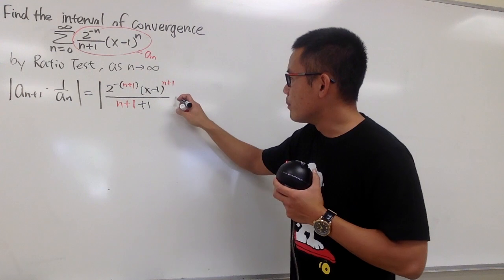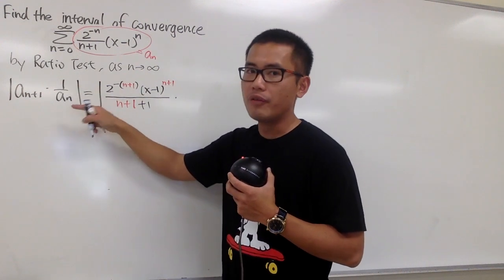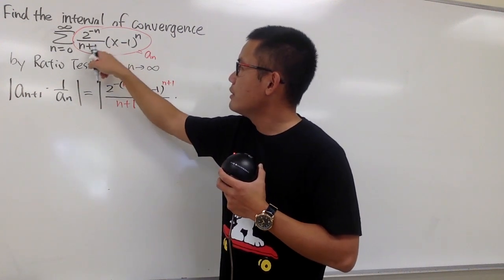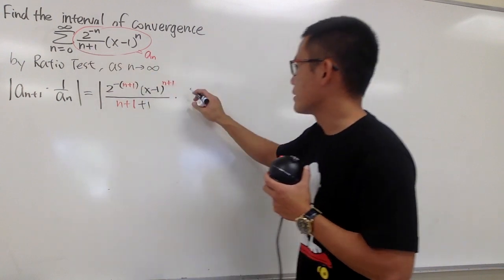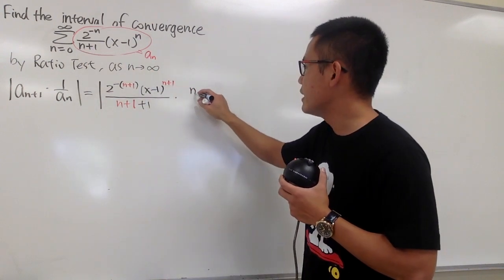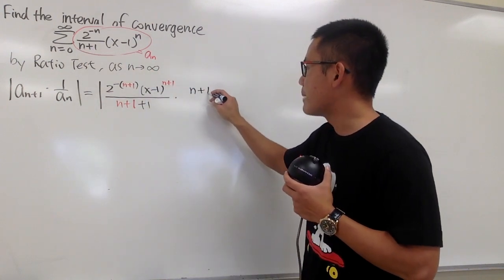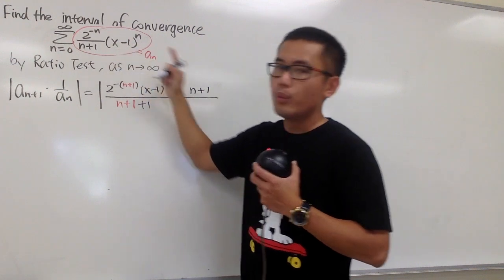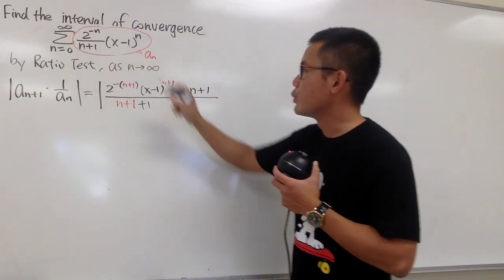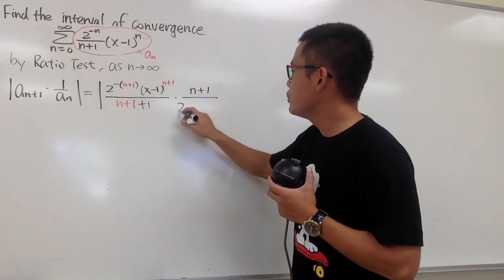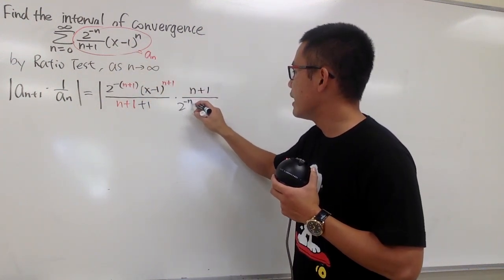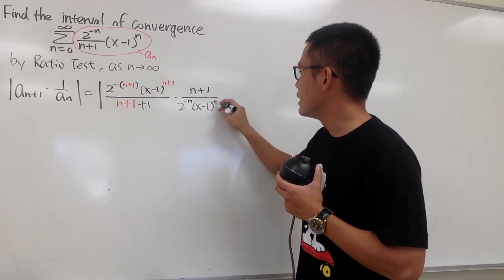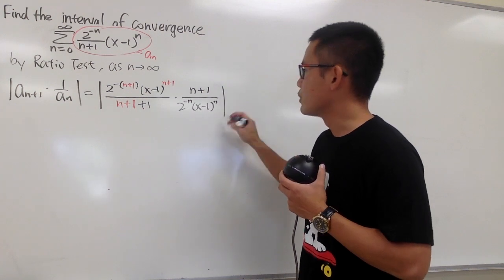Now we multiply by the reciprocal of a_n. What was on the bottom earlier will now be on the top, so we have n+1 on the top. Over that, 2 to the negative n times (x minus 1) to the nth power goes down to the denominator.